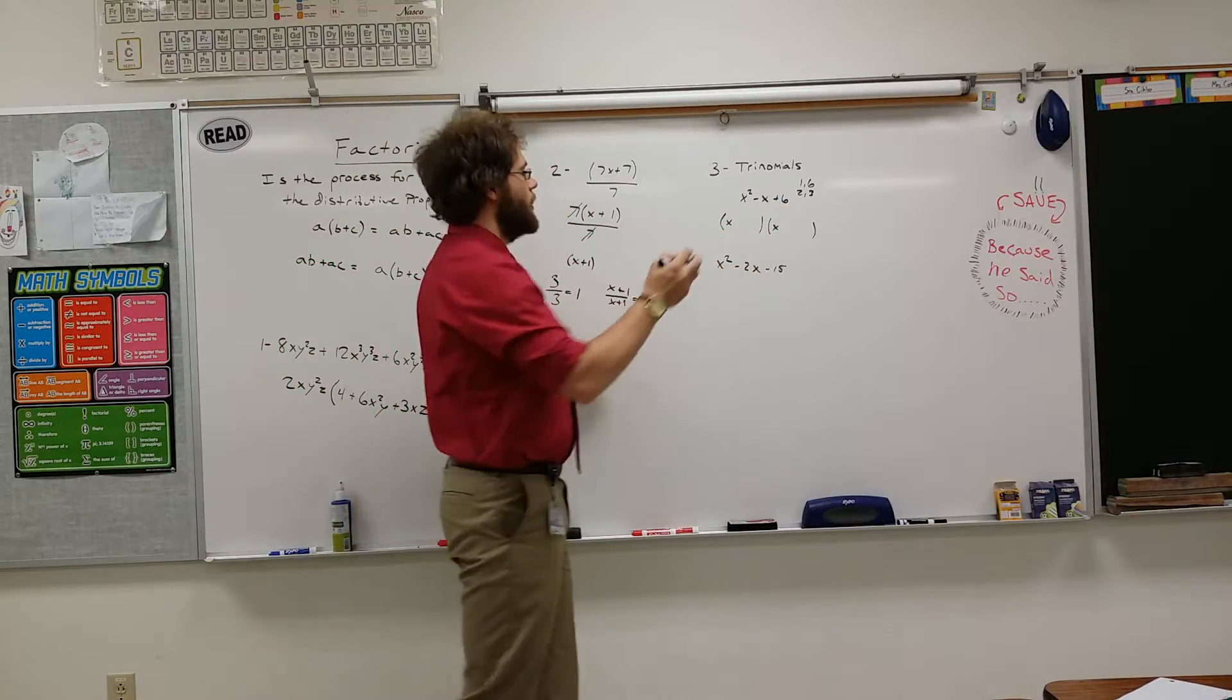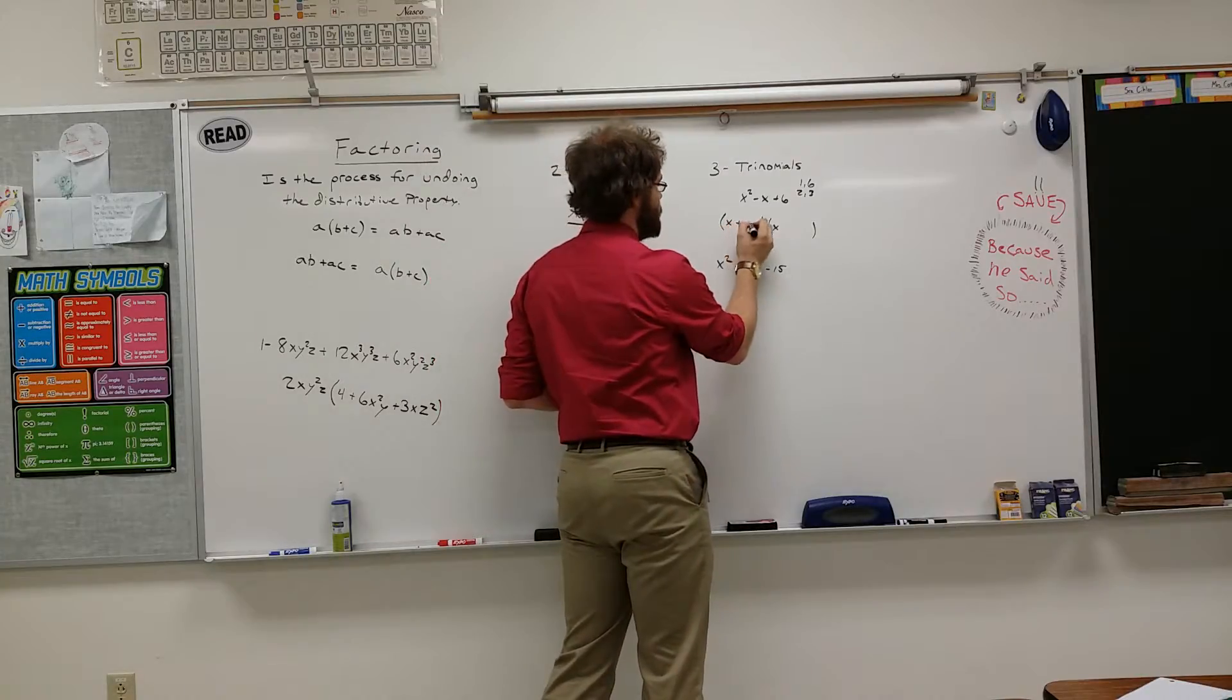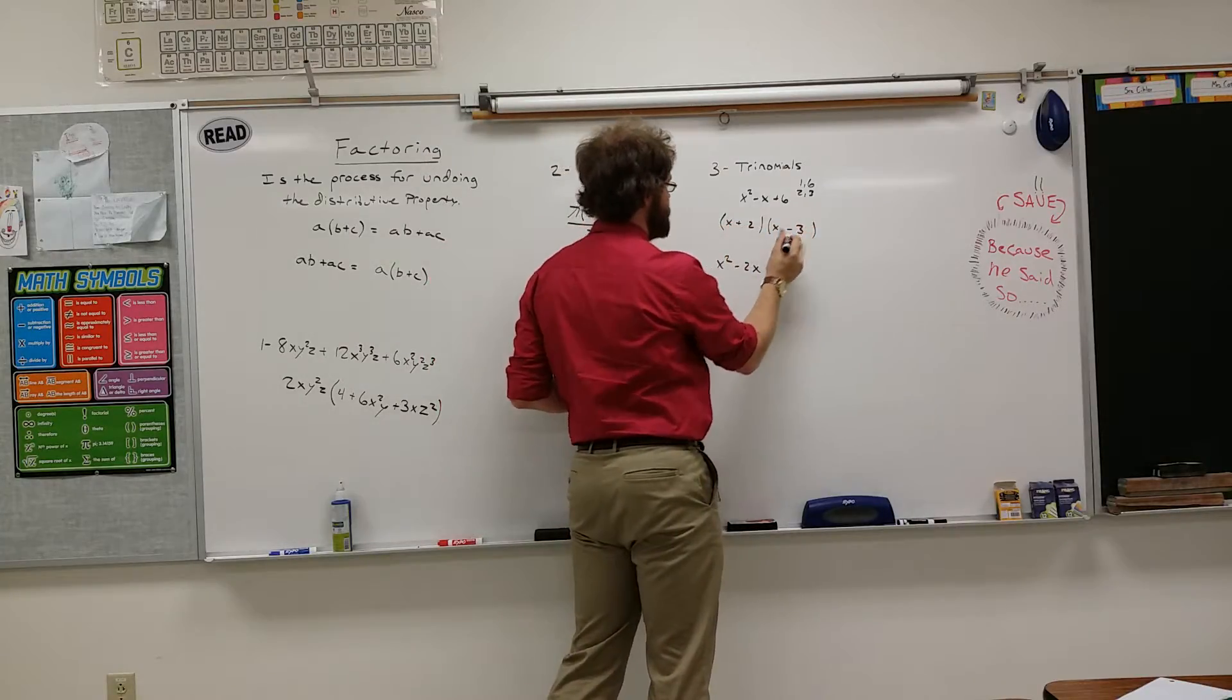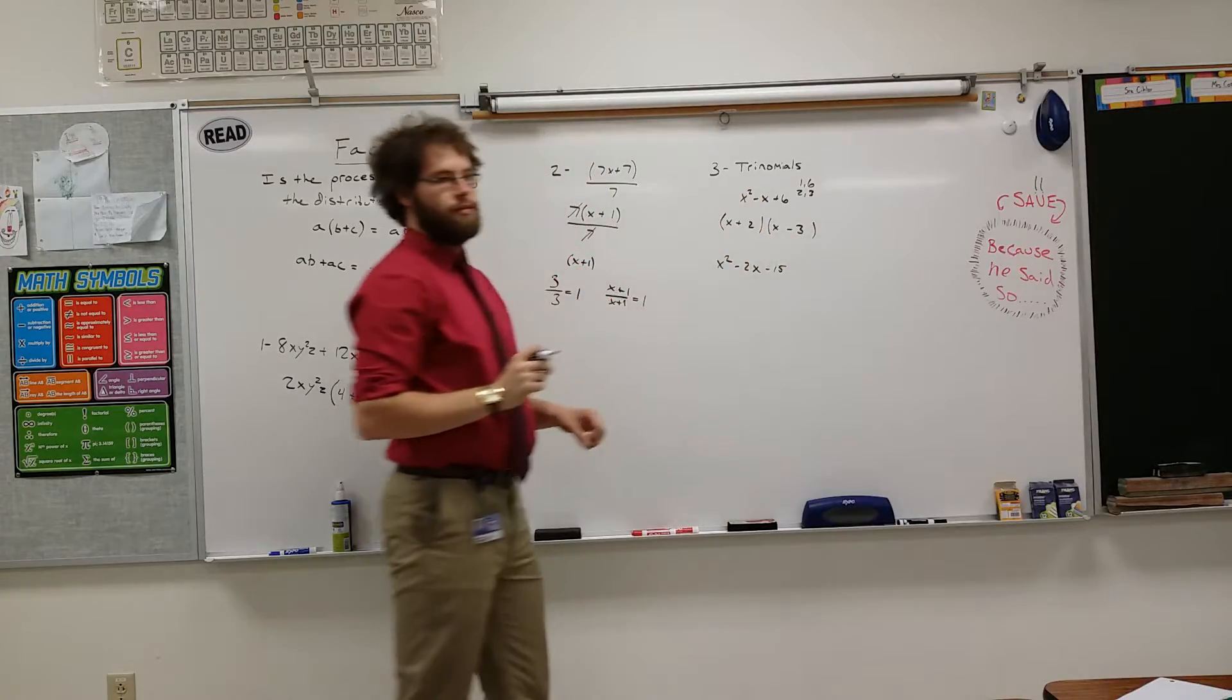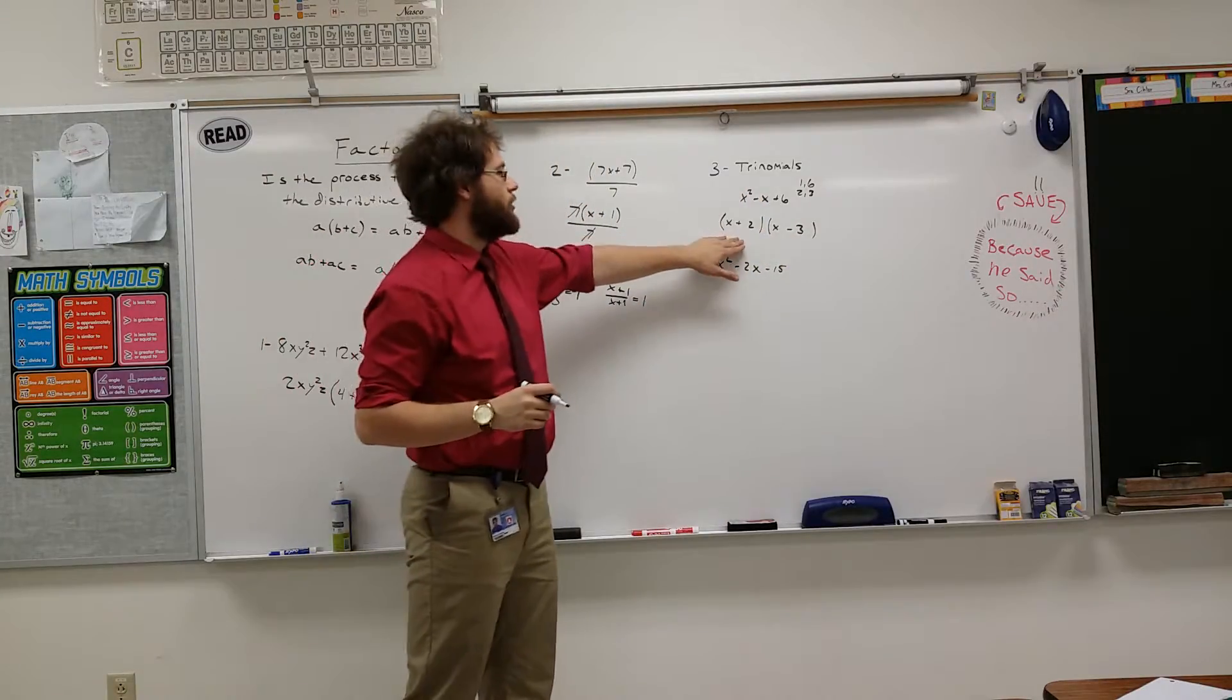But if you put 2 and 3 in there, you can put X plus 2 and X minus 3, 2X minus 3X equals negative X. So, that's correctly factored.